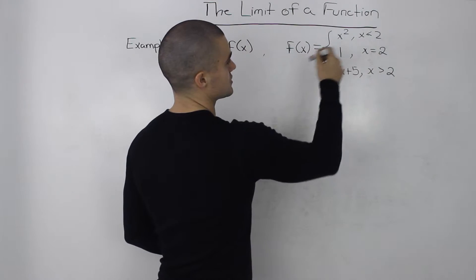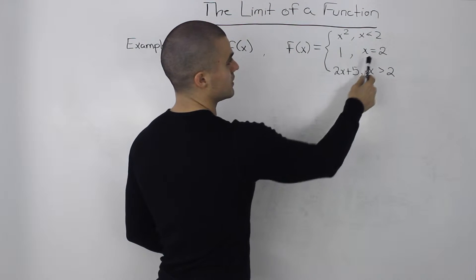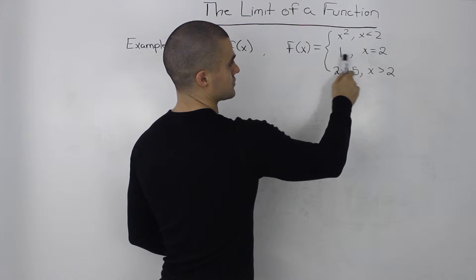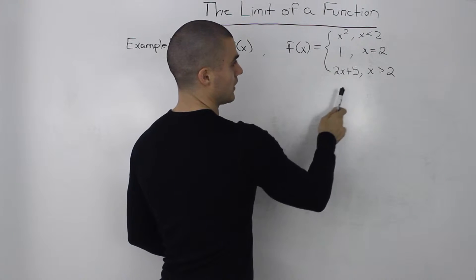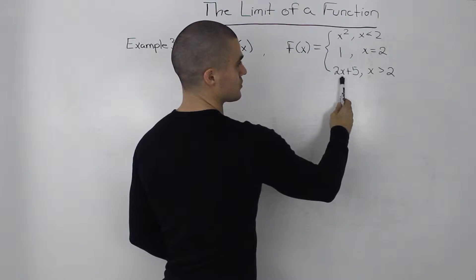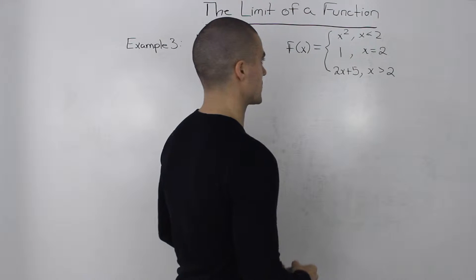So when x is less than 2, the y value is x squared. When x is equal to 2, the y value is 1. And when x is greater than 2, y is equal to 2x plus 5.